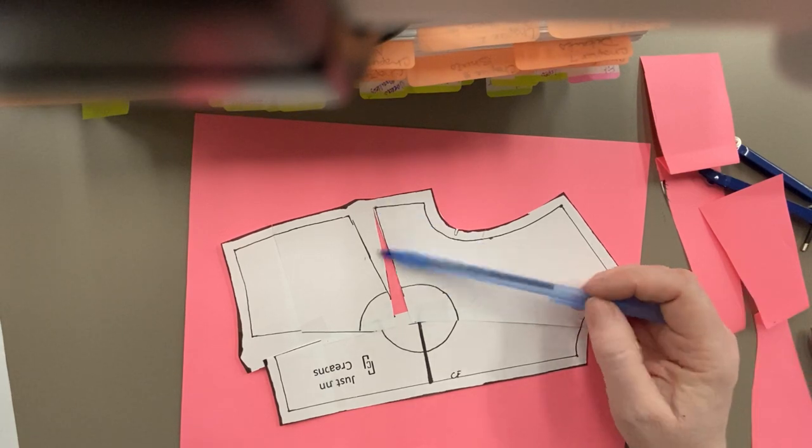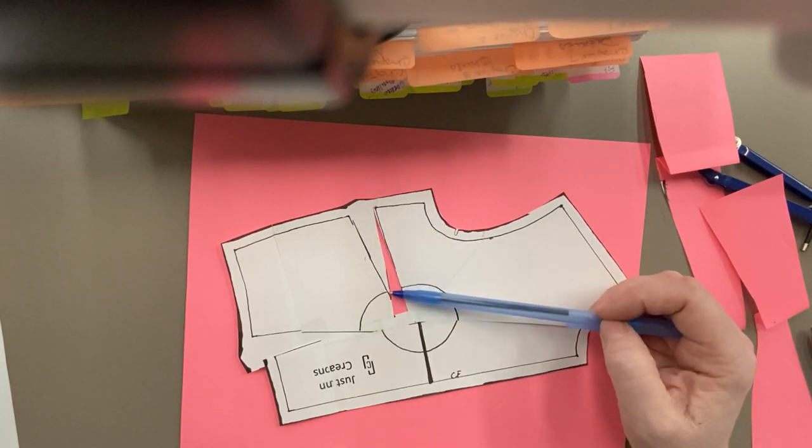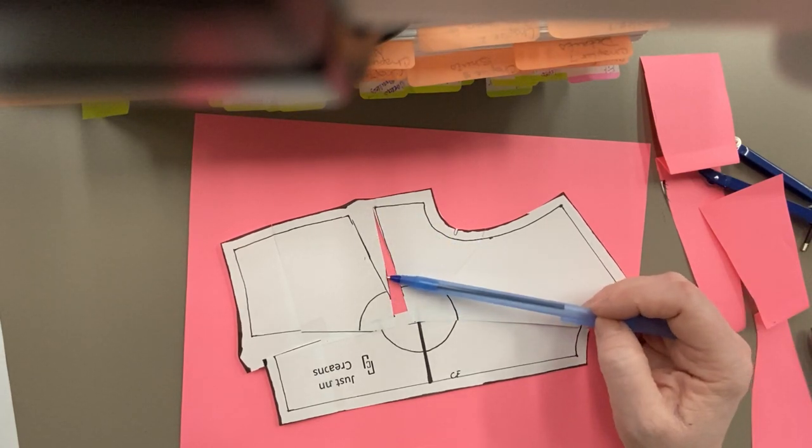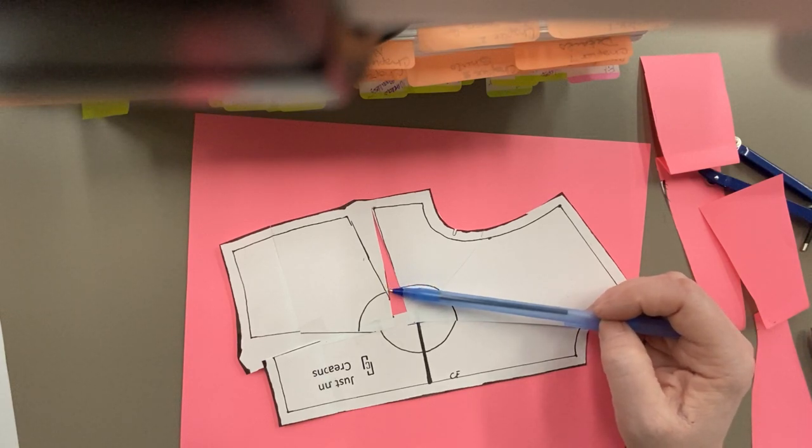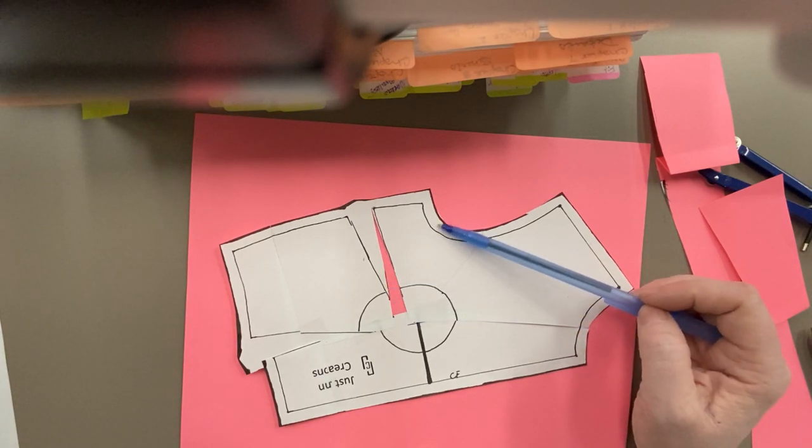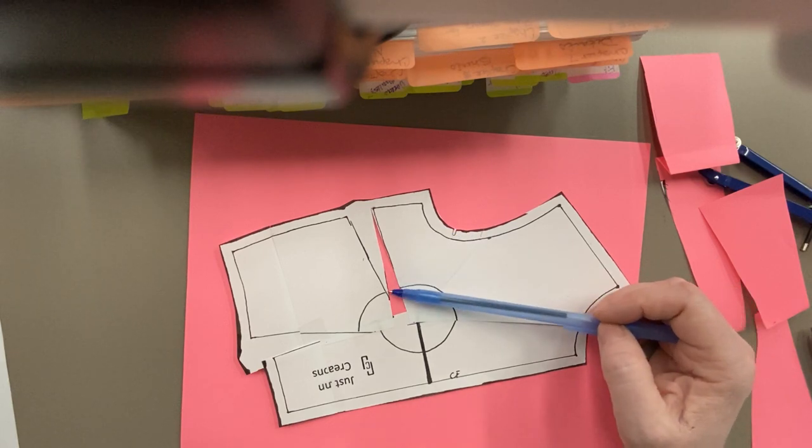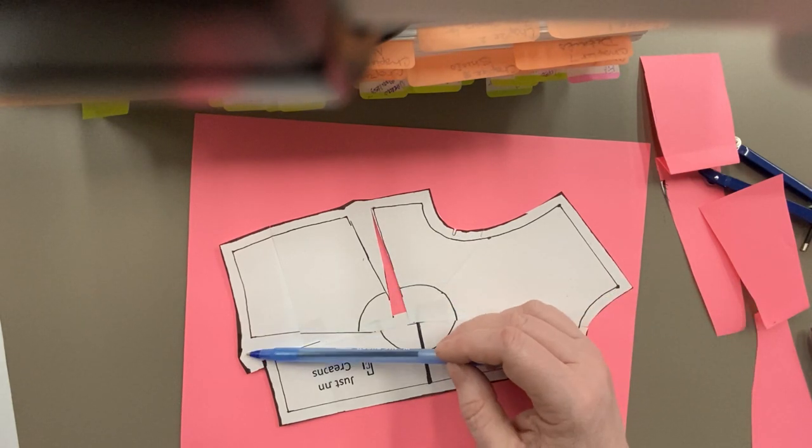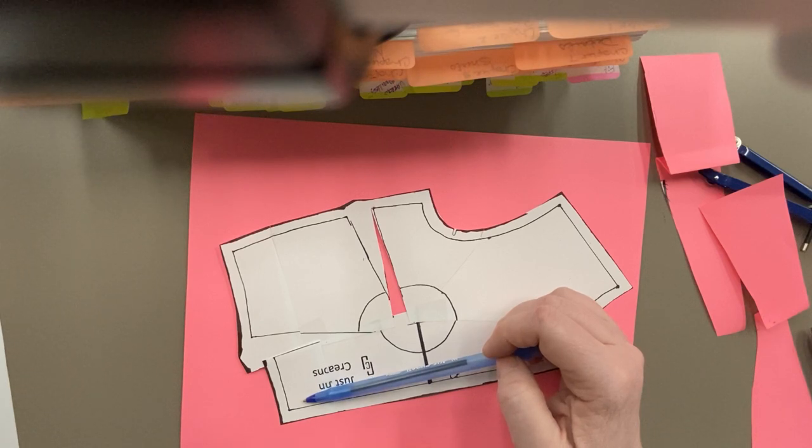Now, as you can see, my bust dart here may or may not have been affected. I may or may not have extra space here. That's pretty normal. We may have to take some out of the arm's eye. Sometimes we have to play with this. I am shorter here. My seam allowance here is different. So what do I have to do?